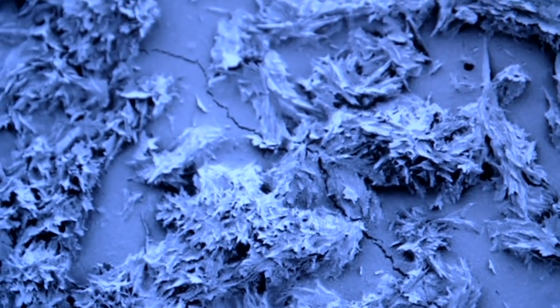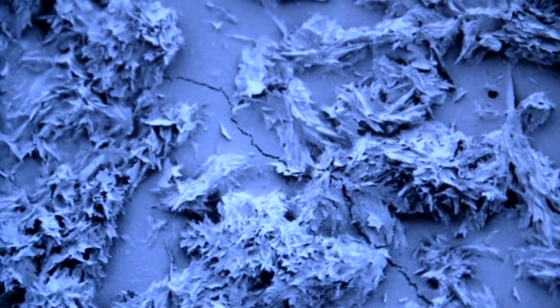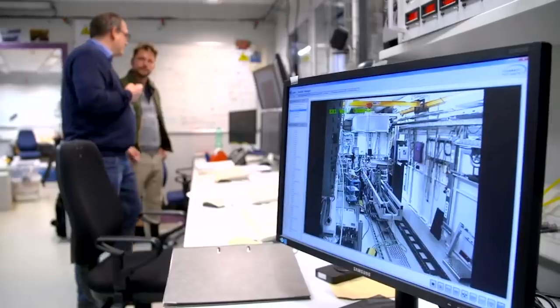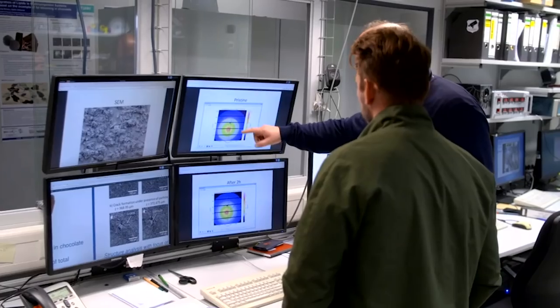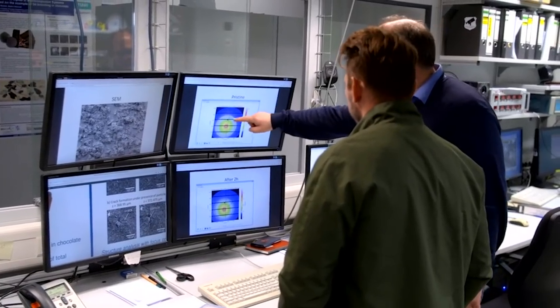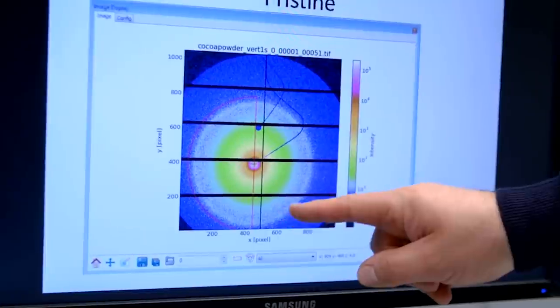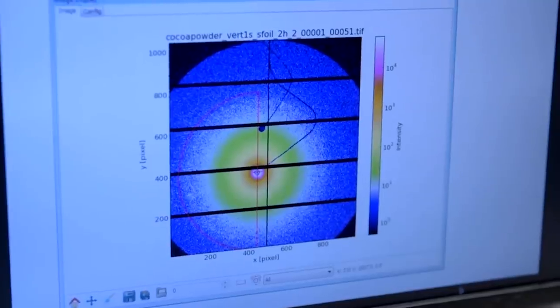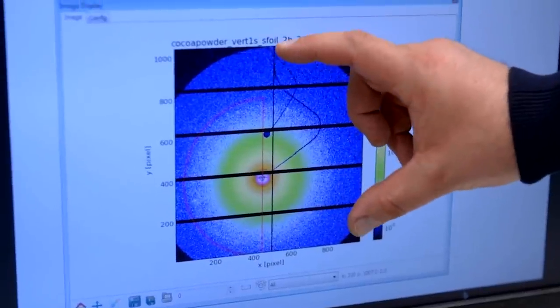Scientists could see it was crystallized fat on the surface causing the bloom, but didn't fully understand how it got there until they got their hands on this x-ray machine, which allowed them to see closer than ever before how the fat travels through chocolate. This ring is indicative of the fat before the fat migration, and when the fat migrates, this ring here, this structure is gone, indicating that the fat migrates to the surface.